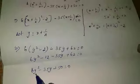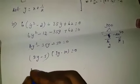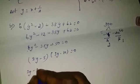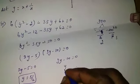Factorise the quadratic equation 6y² minus 35y plus 50 equal to 0. The factors are (2y minus 5)(3y minus 10) equal to 0. From 2y minus 5 equal to 0, y equals 5 by 2. From 3y minus 10 equal to 0, y equals 10 by 3.